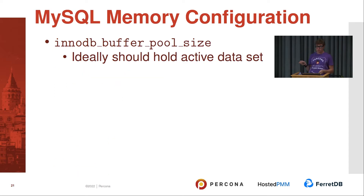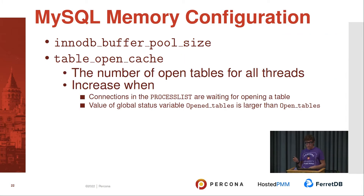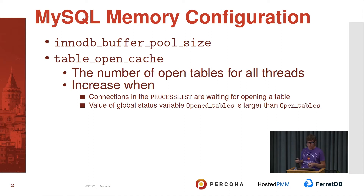For MySQL memory configuration, the most important option is innodb_buffer_pool_size — it should hold your active data set. InnoDB puts all data it reads from disk, and all data it intends to modify before writing to disk, into the buffer pool. If InnoDB has to flush dirty data to disk frequently, that's a performance penalty. Table open cache is not a large amount — just descriptors — but it's important. If a table handle is not in cache, MySQL has to close the table and flush it to disk, which can cause performance issues.